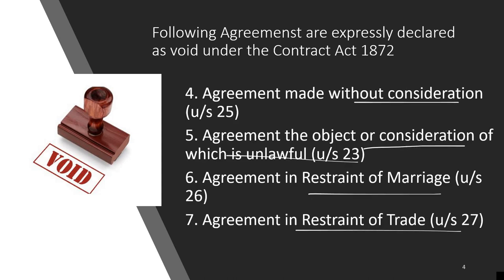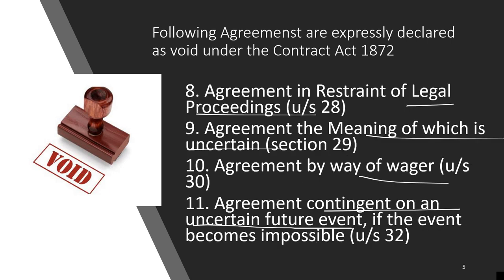Section 25 is about consideration, Section 26 deals with restraint of marriage, Section 27 is restraint of trade, Section 28 is legal proceedings, Section 29 is agreements of uncertain meaning, and Section 30 deals with wagering agreements — which are also null and void. Finally, agreement contingent on an uncertain future event: if the event becomes impossible, the agreement is also void.